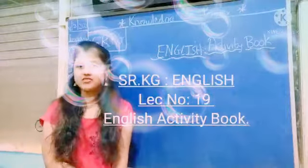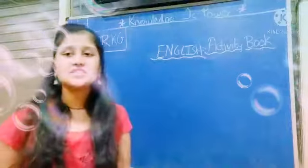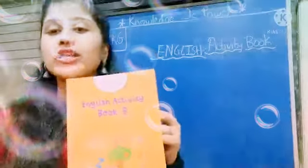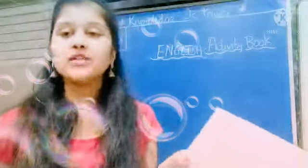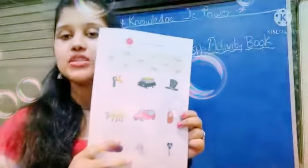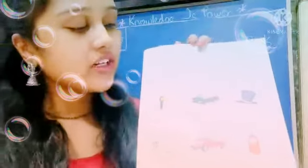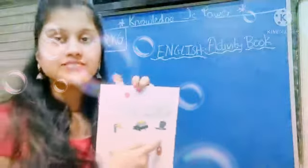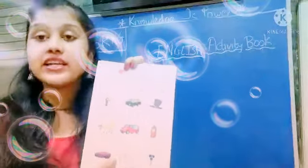Good morning children. So today we will do our English Activity Book. Everyone will remove your English Activity Book, page number 7. What is given over here? Write the correct word. We have learnt these 3-letter words first, so now you have to write them in their correct picture.